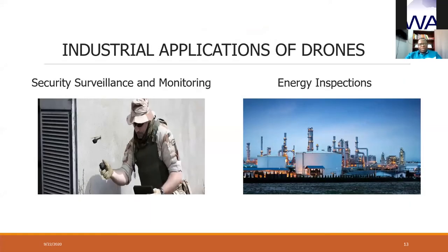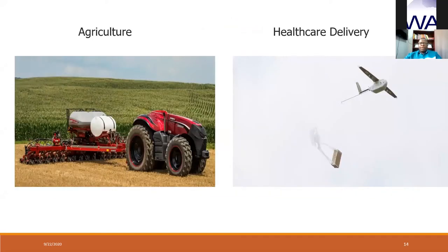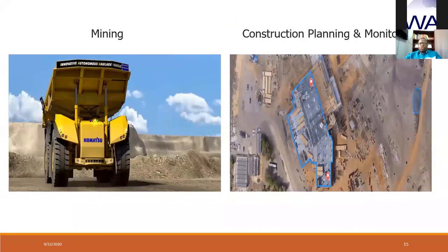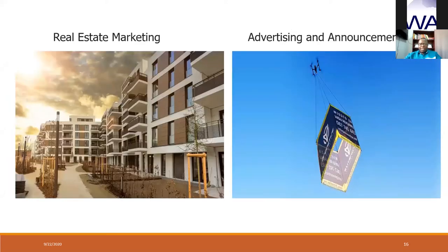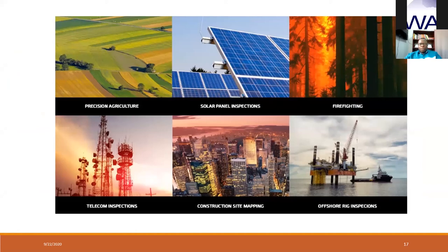Industrial applications of drones include security, surveillance, and monitoring. Currently, the Ghana Army is using drones to monitor border lines to prevent unauthorized entry during the COVID period. Drones are also used for energy inspections, agriculture, healthcare delivery, mining, construction planning and monitoring, real estate marketing, advertising, precision agriculture, solar panel inspections, firefighting, telecom inspections, construction site mapping, and offshore rig inspections.